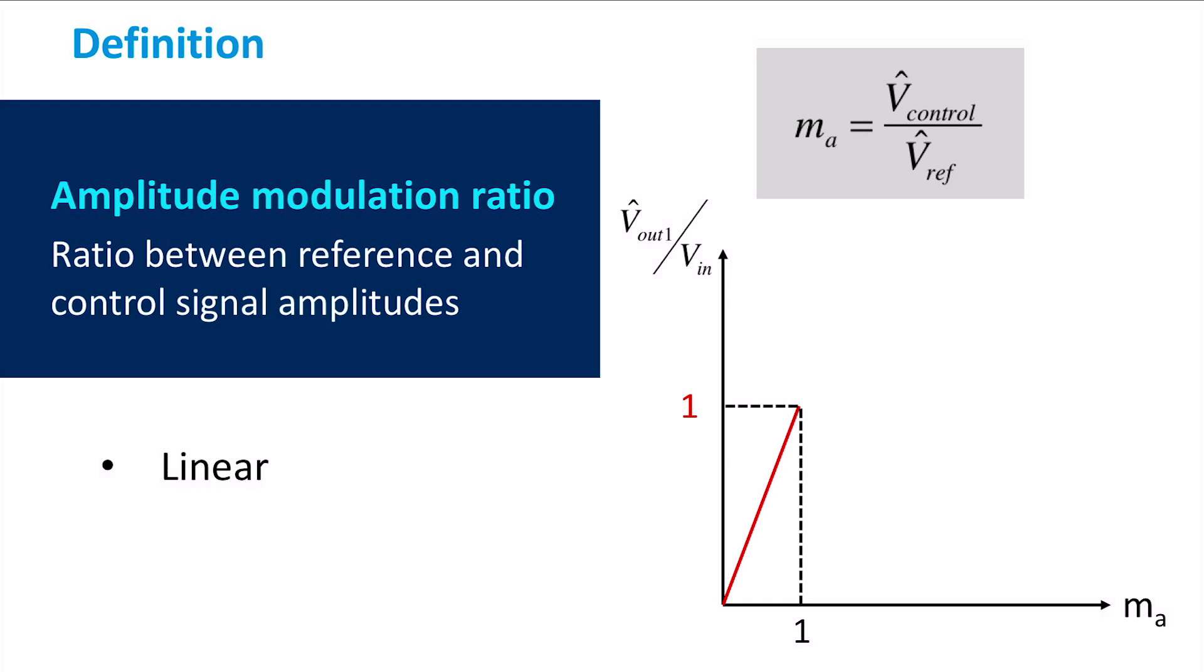This mode of operation works up to the point where the amplitude of the sawtooth signal is equal to the sawtooth reference signal. After this point there is the so-called over modulation region up to until the value of 4 over pi, from where the inverter starts working in a square wave mode. In this mode of operation, the output signal amplitude is 4 over pi times the input voltage amplitude.